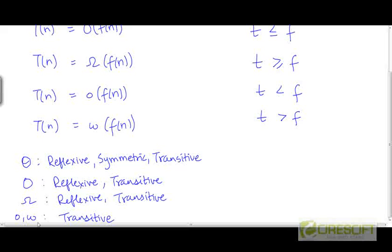The other two relations, little-o and little-ω, are only transitive. They are not reflexive. If t is o(f) and f is o(g), then t is o(g). Likewise for little-ω. So again, we have a symmetry across these two relations, but not within each relation.